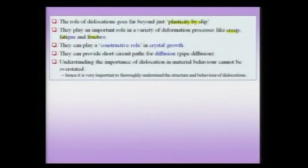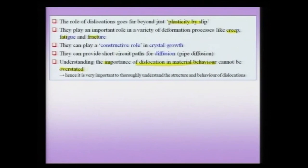Dislocations can provide short circuit paths for diffusion. The diffusivity occurring at the core of dislocations — through the dislocation region — is called pipe diffusion, and it is many orders of magnitude higher than normal lattice diffusion. We will try to understand why this is so, which will become obvious once we understand the structure of a dislocation. The importance of dislocations in material behavior cannot be overstated — the more we understand dislocations, the better our understanding of material behavior, especially the mechanical behavior of materials.